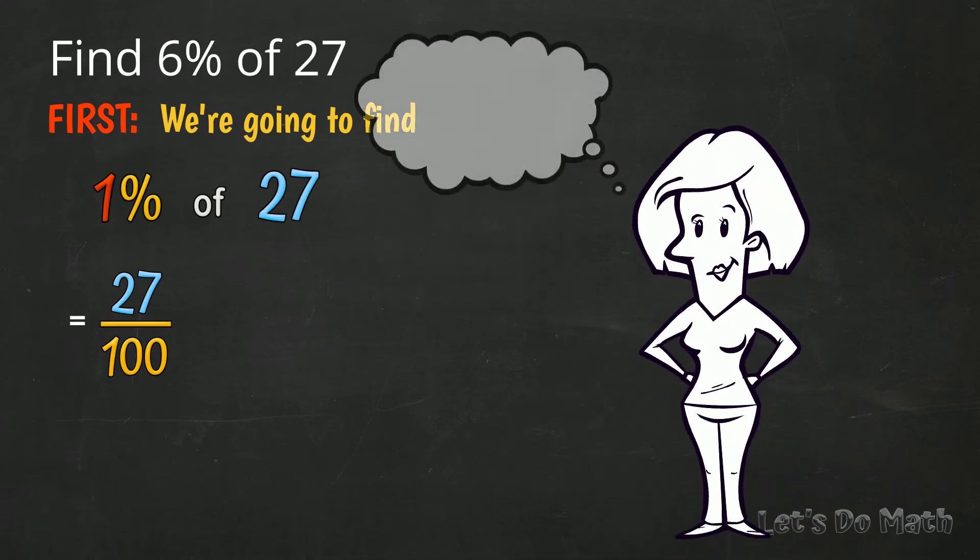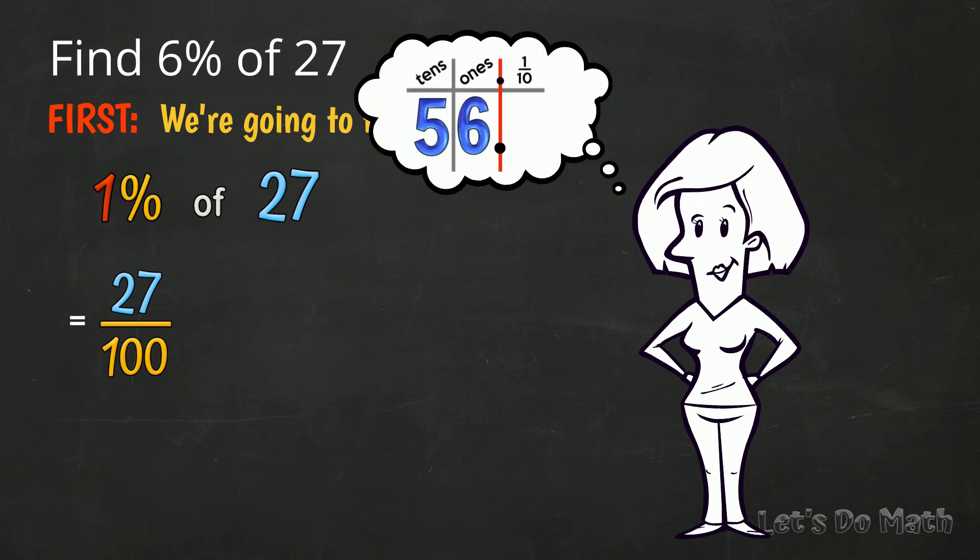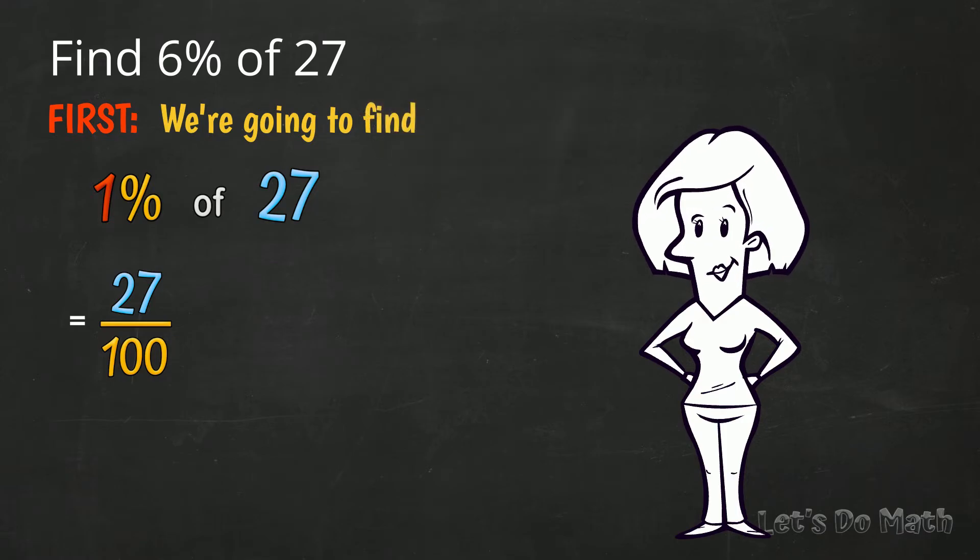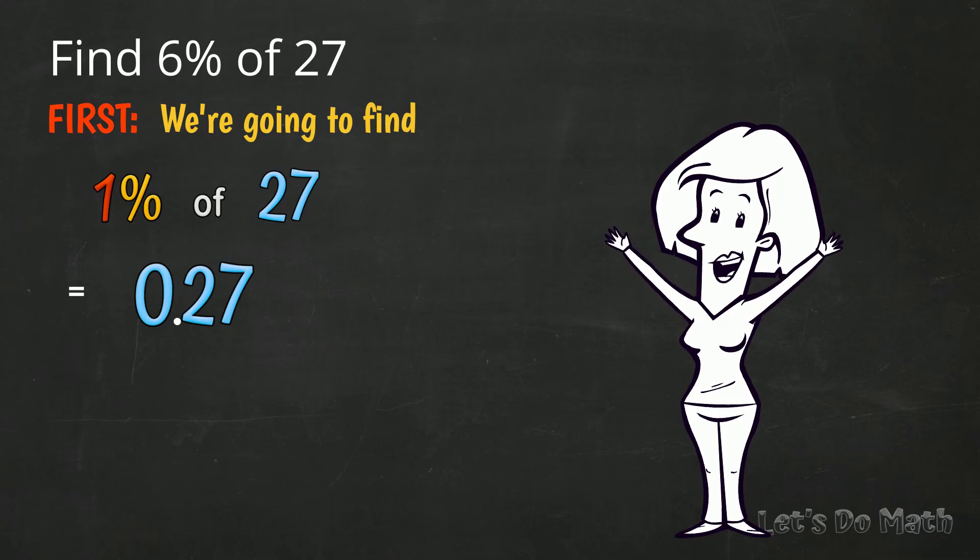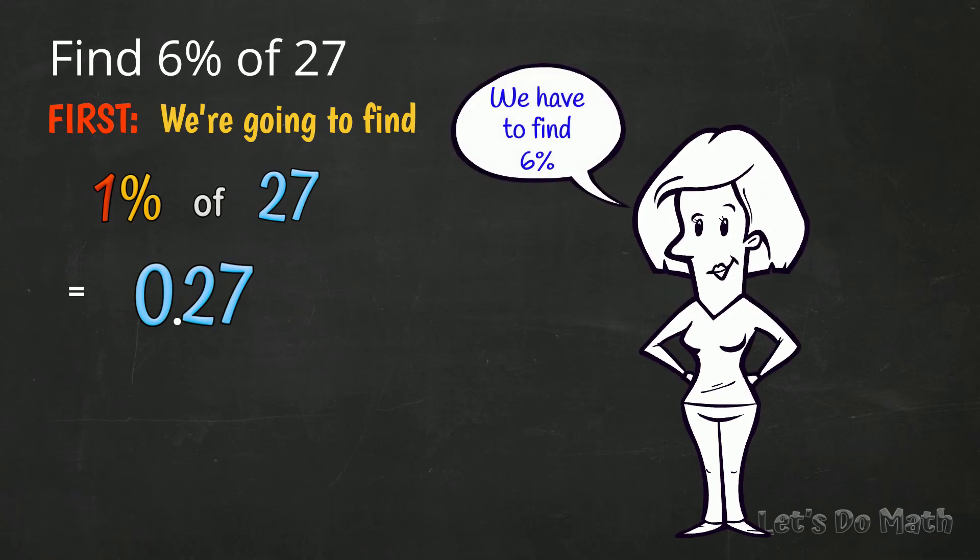In any whole number, you can imagine the decimal point to the right of the 1's digit. Invisible until you need it. When you divide by 100, you need to move the decimal point to the left two places. 1% of 27 is 0.27. We have to find 6% though.